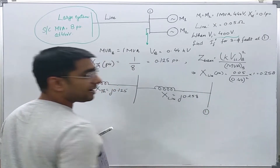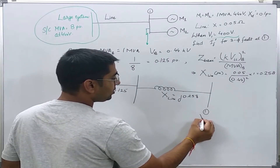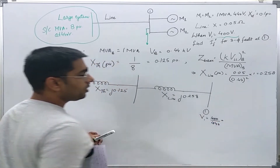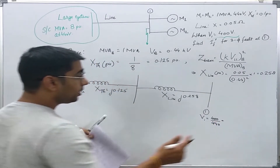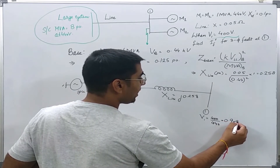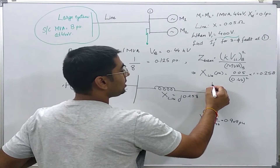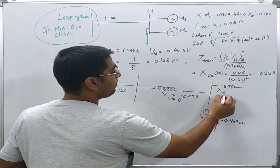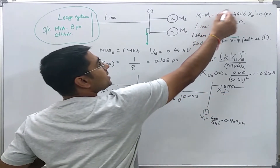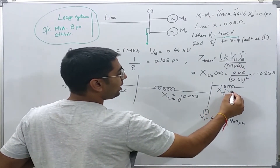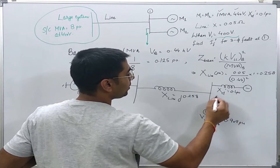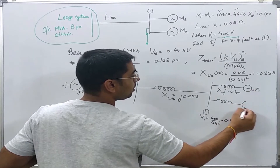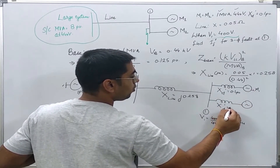Bus 1 has a voltage V1 of 400 volts, which in per unit is 400 divided by 440, equal to 0.909 per unit. The two motors each have XD' equal to 0.1 per unit, since base voltage and base MVA are the same as the machine ratings.